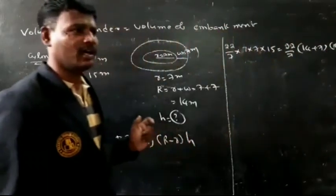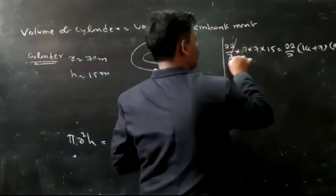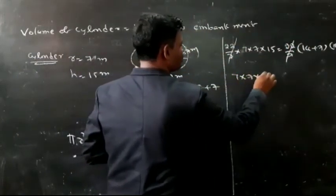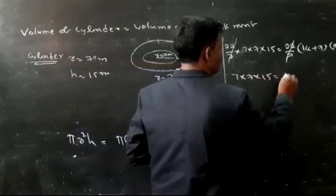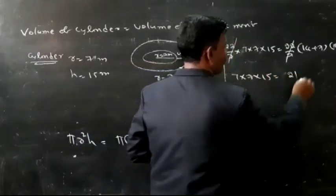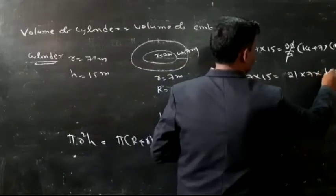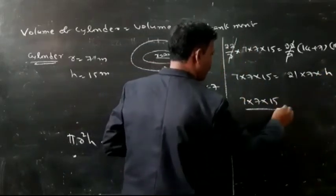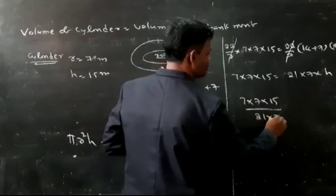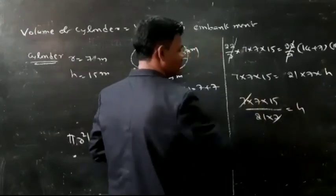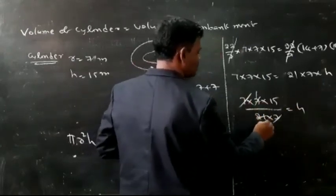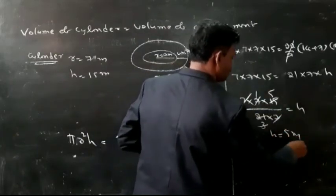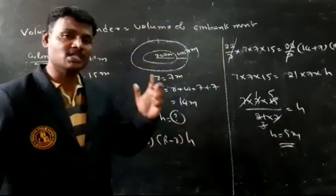Solving: 7 into 7 into 15 by 21 into 7 equals H. After cancelling 7 and 7, and simplifying 15 by 21 to 5 by 7, further cancellation gives H equals 5 meters. So the height of the embankment is 5 meters.